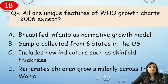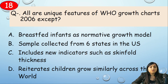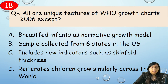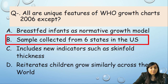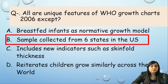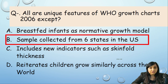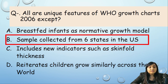All are unique features of WHO growth charts 2006 EXCEPT — breastfed infant is a normative growth model, sample collected from six states in the US, includes new indicators such as skinfold thickness, or it demonstrates children growing similarly across the world? Option B is incorrect: the study did NOT collect samples from six states in the US. It included breastfed infants from six countries across the world, included new indicators like skinfold thickness, and demonstrated children grow similarly worldwide.